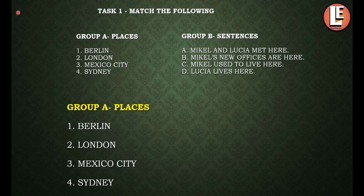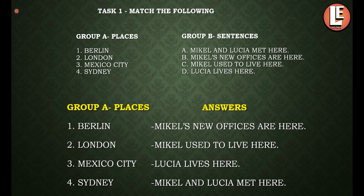For Berlin, the answer is: Michael's new offices are here. For London, the answer is: Michael used to live here. For Mexico City: Lucia lives here. And for Sydney: Michael and Lucia met here — Sydney is the city where the two of them met.